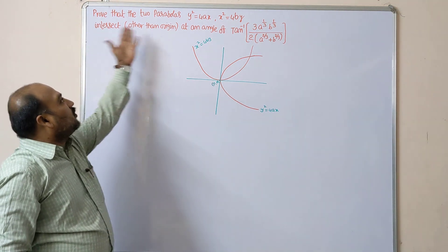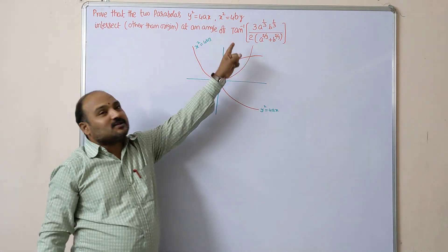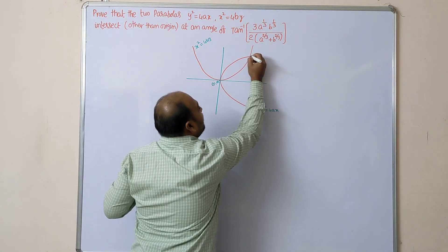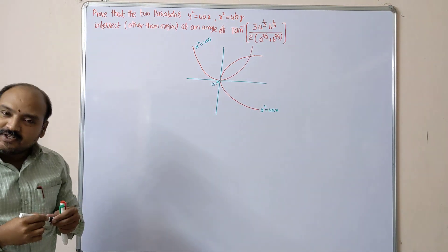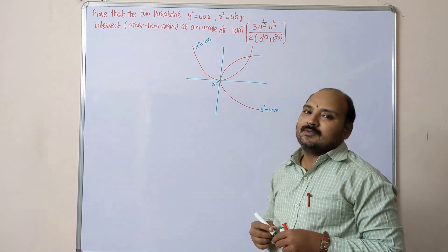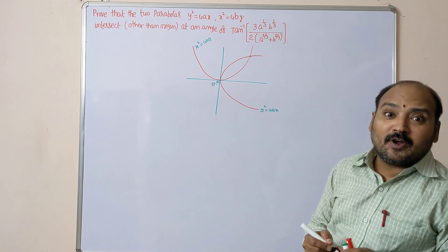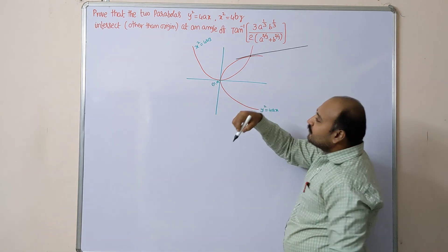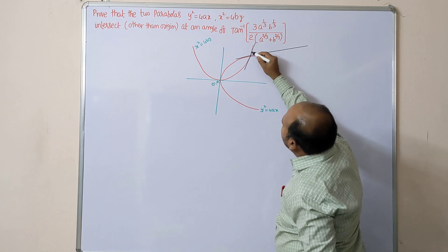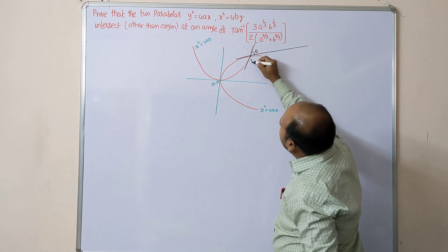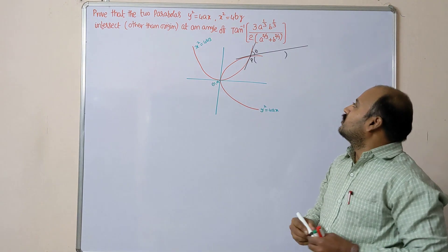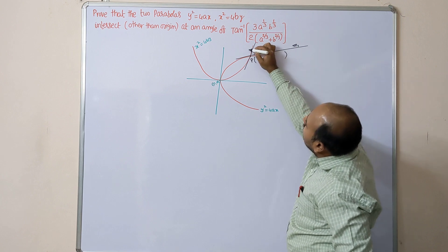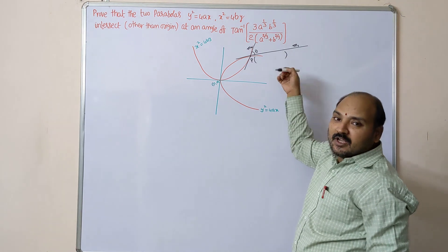The question mentions that the parabolas intersect other than the origin. The angle between two curves is defined as the angle between the two tangents at their point of intersection. For the first curve this is the tangent, and for the second curve this is the tangent. We take angle theta at the point of intersection. We need to find the slopes m1 and m2 of both tangents at this point.